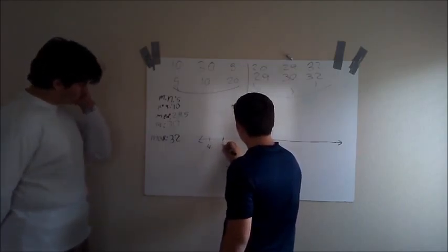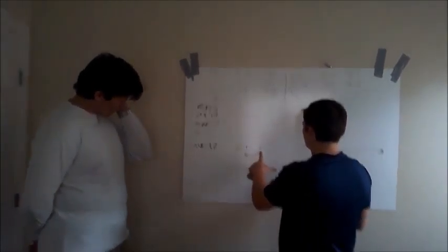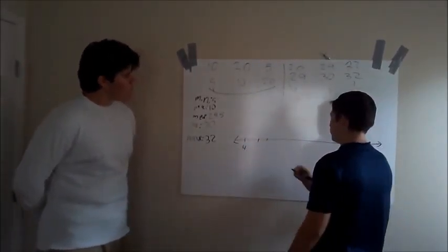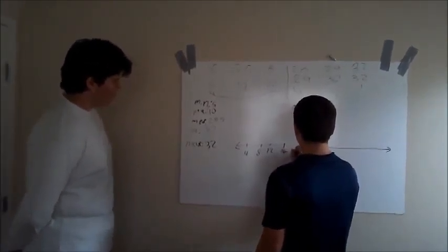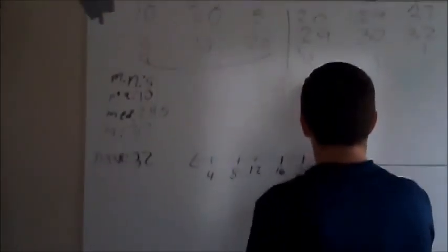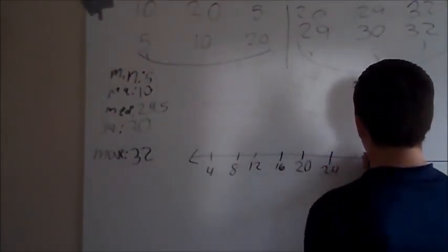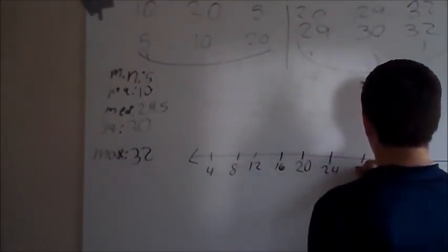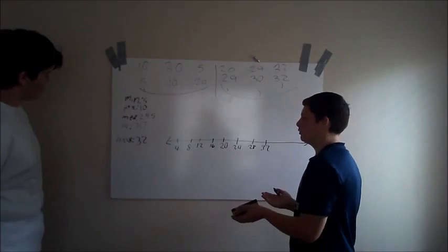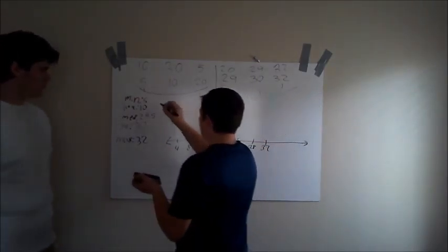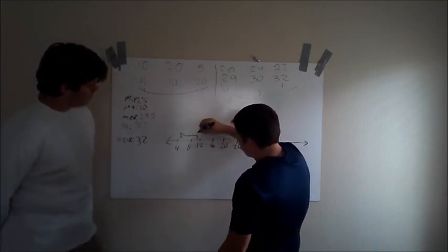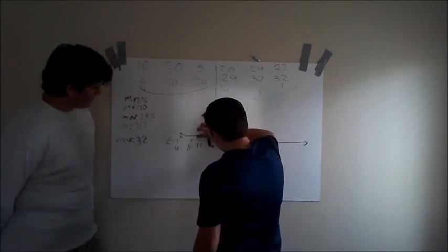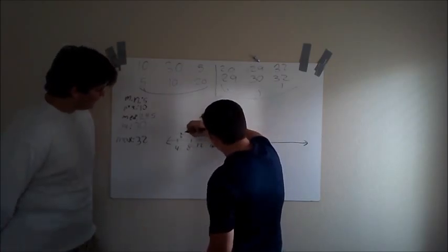Here's where we get the box plot. Now we need to make a number line, with the smallest number being here — at 5. We can go 4, 8, 12, 16, 20, 24, 28, 32. And that is our number line.